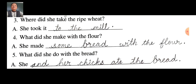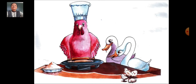Fifth question: What did she do with the bread? What did she do with the bread? Answer: She and her chicks ate the bread. The little red hen and her chicks ate the bread.